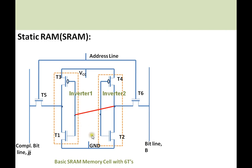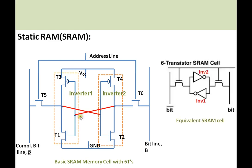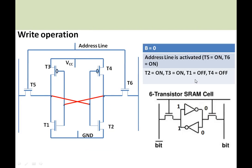The output of inverter 2 is connected to the input of inverter 1, and the output of inverter 1 is connected to the input of inverter 2. Both inverters act as a latch and retain one bit of data. Here we can see the equivalent SRAM cell where inverter 1 and inverter 2 are replaced by their symbols.